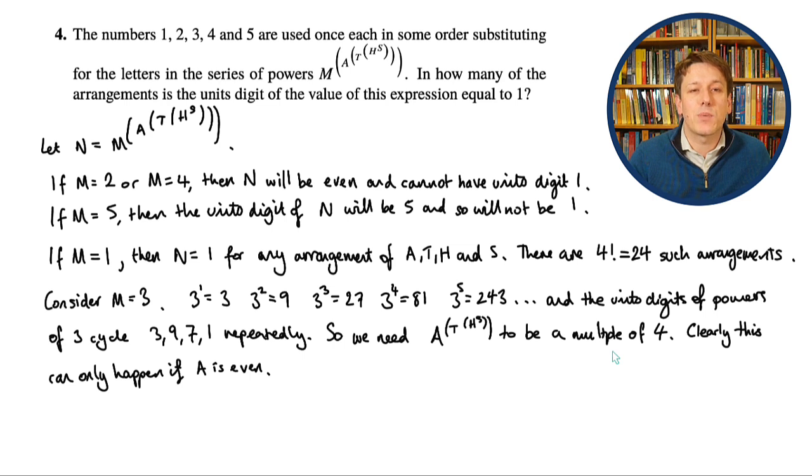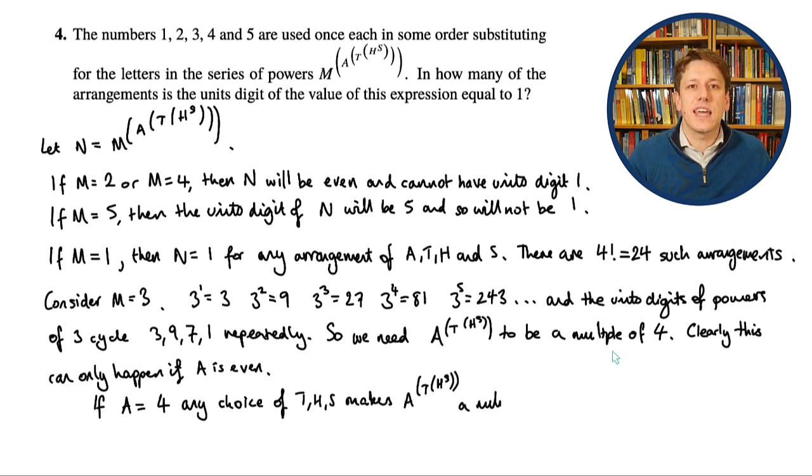So we just have to consider the two cases where a is either 2 or 4, and a equals 4 is the slightly easier of those two cases. Because if a is 4, then any choice of t, h, and s will make a to the t to the h to the s a multiple of 4, because I'll have 4 to the power of something, and 4 times 4 times 4, whatever, is always going to be a multiple of 4. So again, there are 3 factorial, which is 6 such arrangements for that, because I can take any choice for t, h, and s once I've fixed a is 4, so 3 choices for t, 2 choices for h, and finally just 1 choice left for s, so 3 times 2 times 1.